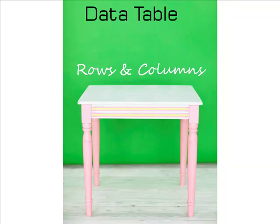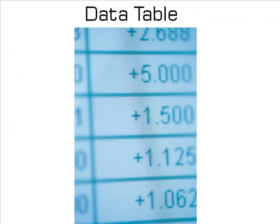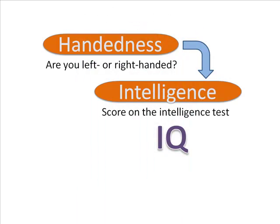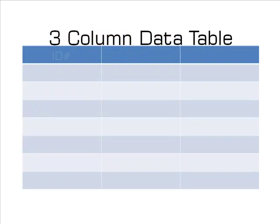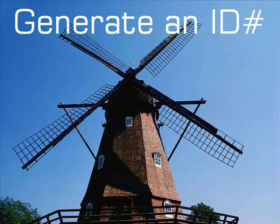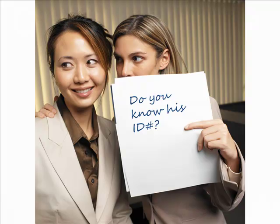We build a table of numbers. This organization, called a data table, consolidates the numbers into a very useful form. Since we have two variables, we could make a two-column table, but let's make three columns. In the first column, we'll put an ID number to identify the subject. In the other columns, we'll put their IQ and handedness. Creating an ID number is easy — we probably did it when we ran the experiment. If we numbered the personal questionnaires, we could use that number.